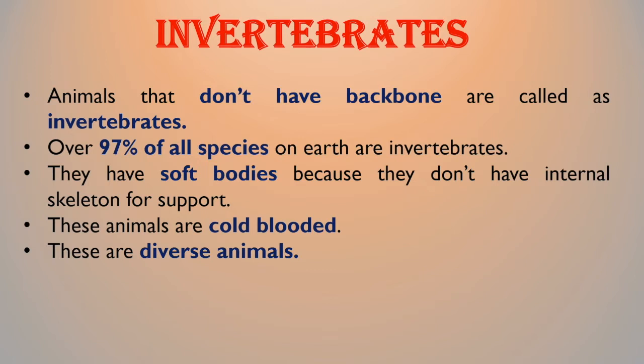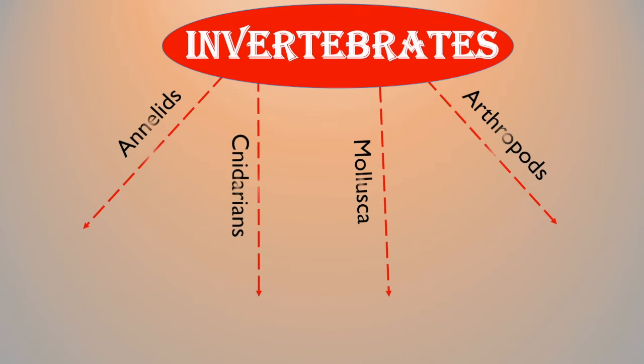Over 97% of all species on Earth are invertebrates. They have soft bodies because they don't have an internal skeleton for support. These animals are all cold-blooded. They are diverse animals based on habitat and structural differences.